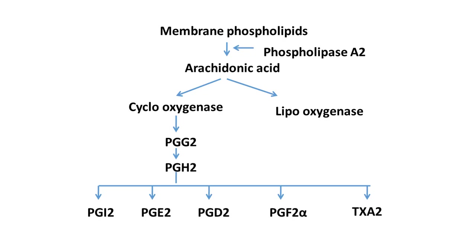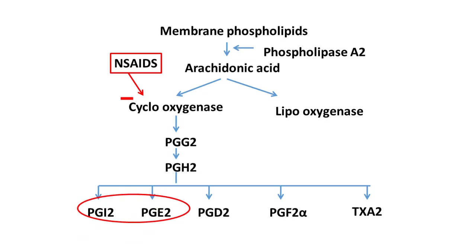Non-steroidal anti-inflammatory drugs act by inhibiting cyclooxygenase enzyme. Unfortunately, when they do this, they also deplete prostaglandin I2 and prostaglandin E2. We know that when PGI2 binds to its receptors on the parietal cell, it decreases hydrochloric acid production. When PGE2 binds to its receptors on the mucosal epithelial cell, it causes an increase in the secretion of bicarbonate, mucus, and mucosal blood flow. With the depletion of both these prostaglandins, the patient is at greater risk of developing a peptic ulcer.